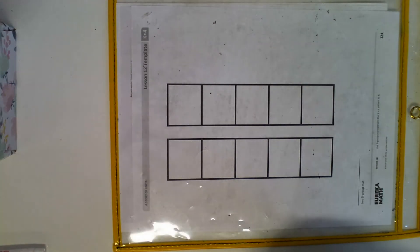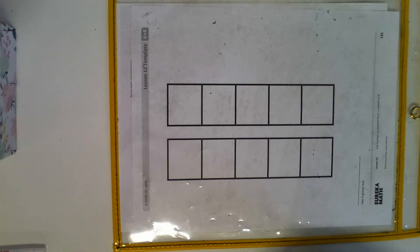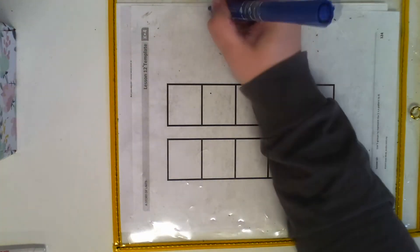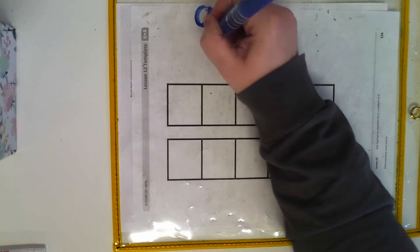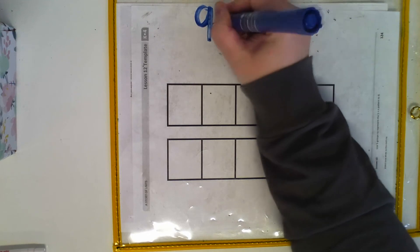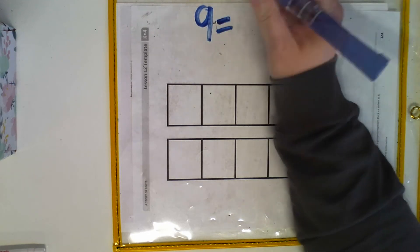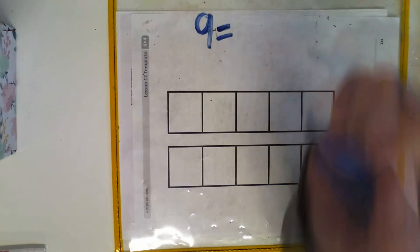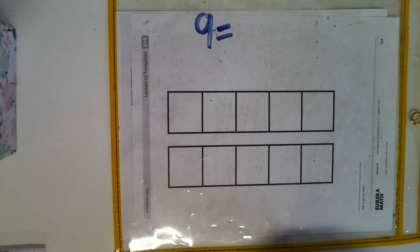We're going to have a little bit — it's kind of like a story, like a word problem that we're going to try and figure out. So my word problem says: Michael has nine blocks. The first thing I want you to do is write nine all together, because that's how many we know he has. The next part says...